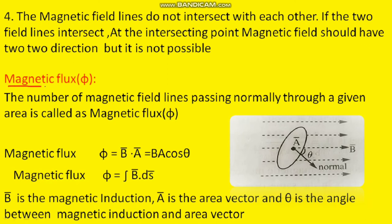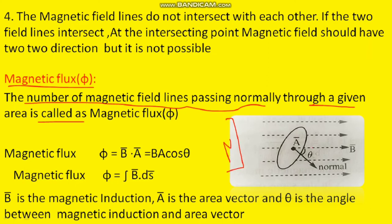Now let us see the next topic: magnetic flux. The number of magnetic field lines passing normally through a given area is called magnetic flux. For example, if we place a North Pole here and a South Pole here, the field direction is from North to South. Taking a closed surface, how many lines pass through that surface — that count is called magnetic flux.